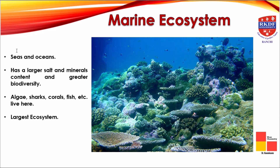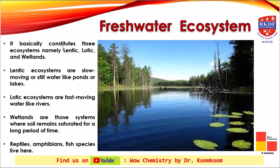The second category is the aquatic ecosystem, which includes the marine ecosystem — considered the largest ecosystem because most of the earth comprises seas and oceans. It has a large salt and mineral content, and algae, sharks, corals, and fish live here. Abiotic components such as water, humidity, and dissolved oxygen are also present. The next aquatic ecosystem is the freshwater ecosystem, which comprises the lentic ecosystem (slow-moving or still water like ponds or lakes), the lotic ecosystem (fast-moving water like rivers), and the wetland ecosystem (saturated soil ecosystems where reptiles, amphibians, and fish species live).